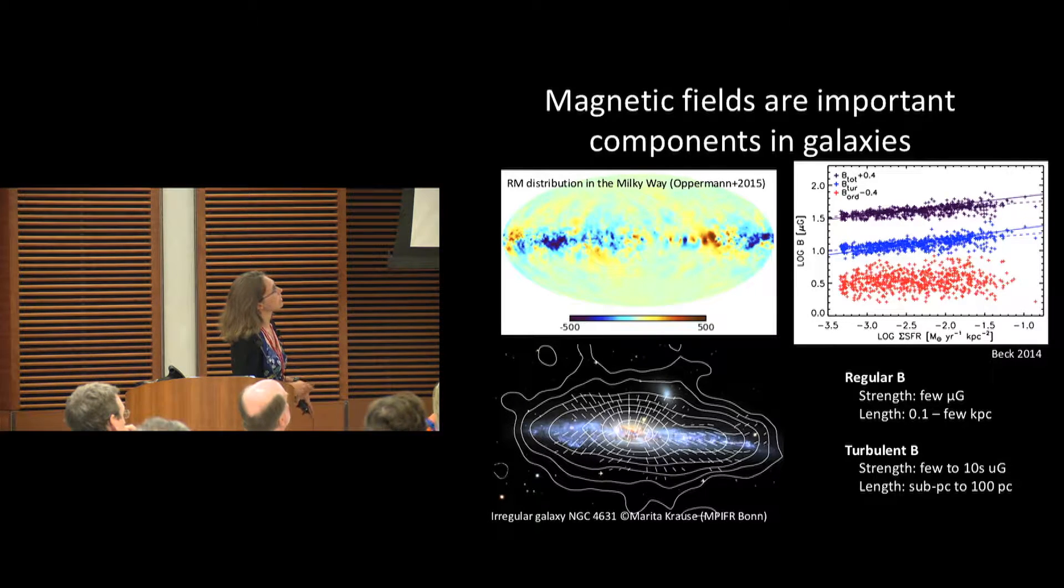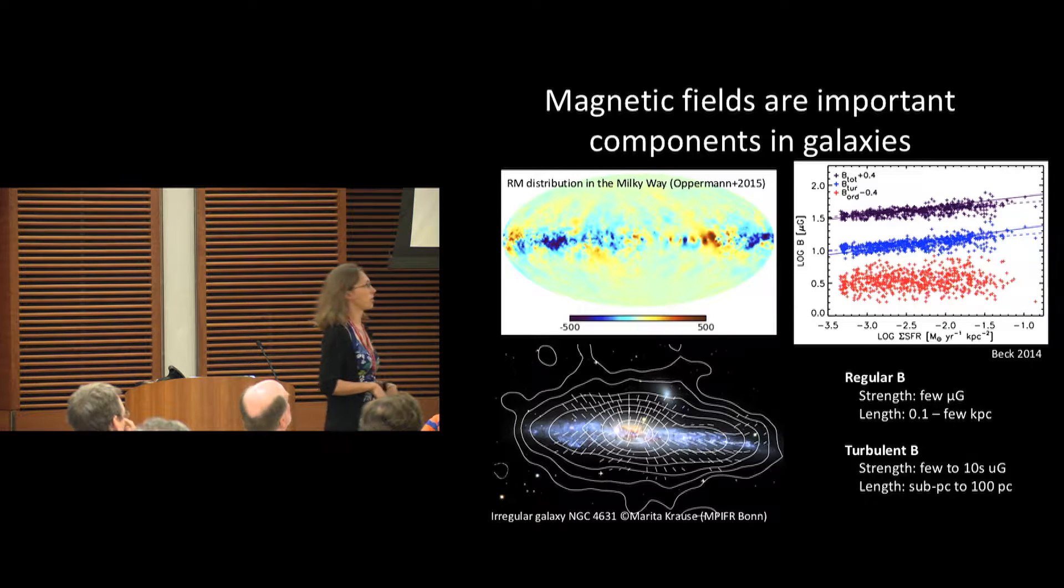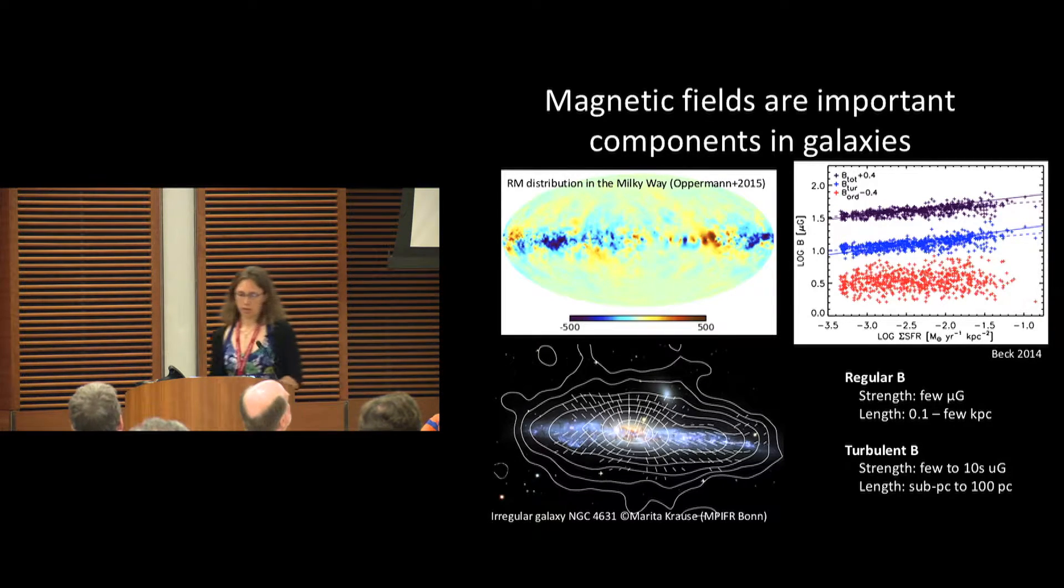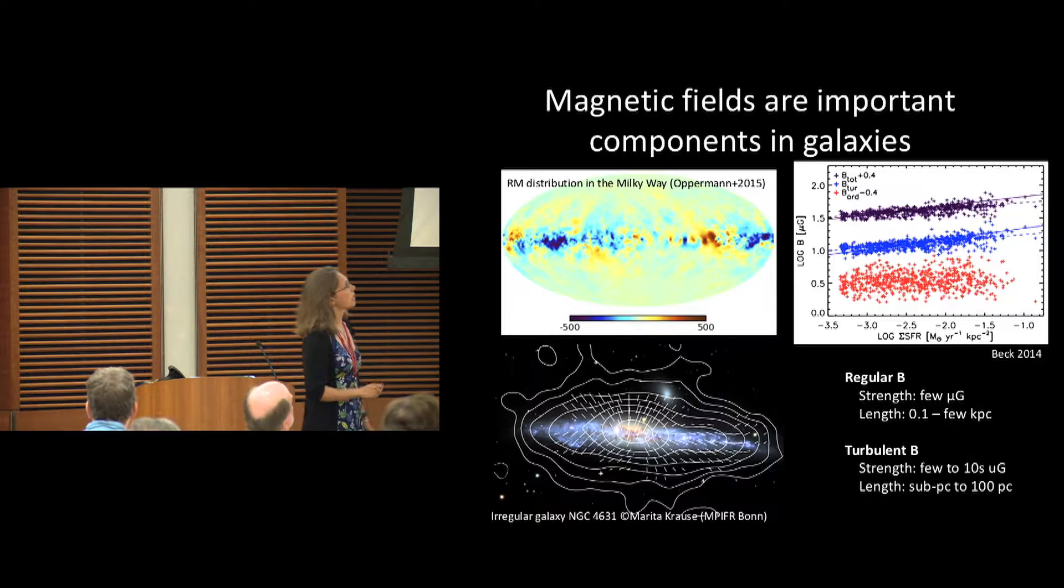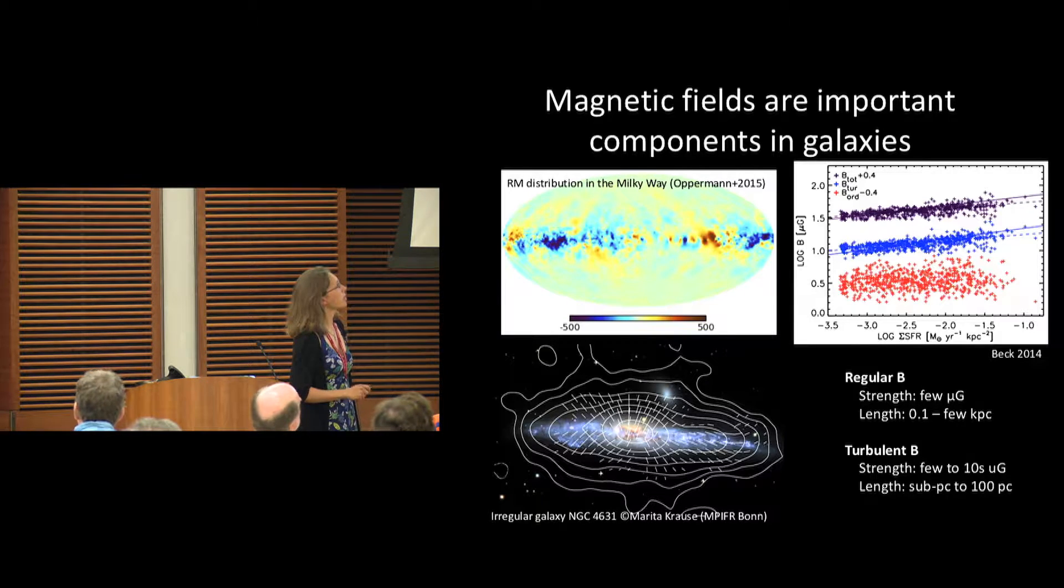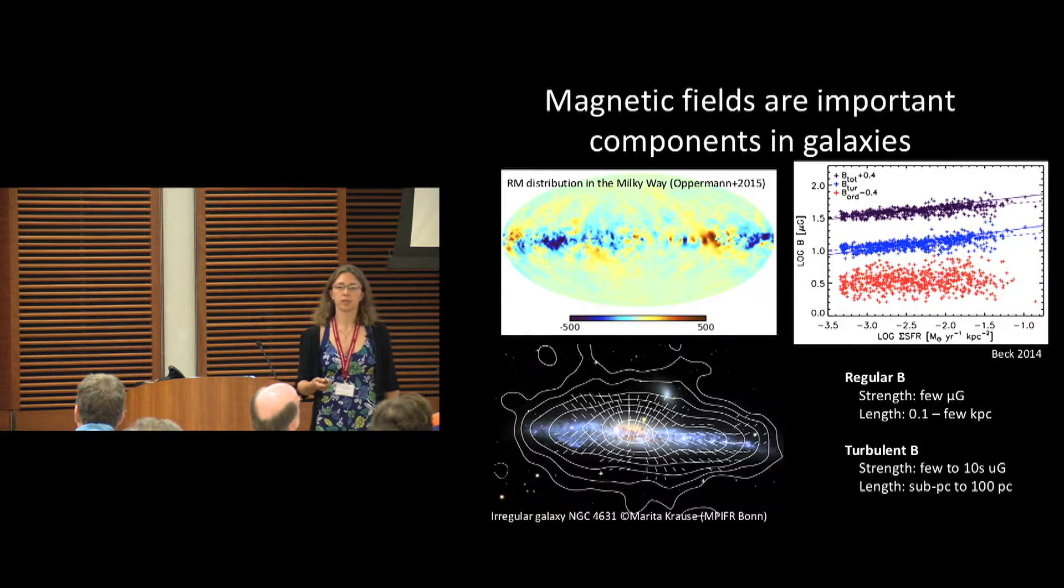In this top right here we have the magnetic field strength as a function of the surface star formation rate in the spiral galaxy NGC 6946. We can see that there's a scaling relationship here. When we observe magnetic fields, we see several different components.